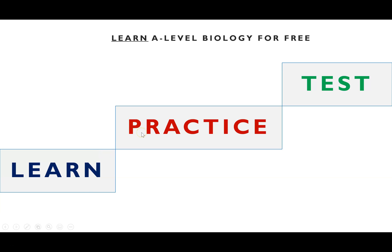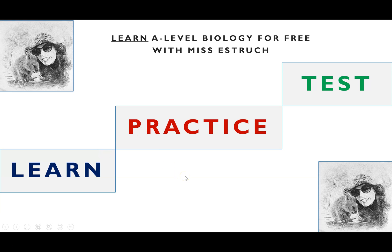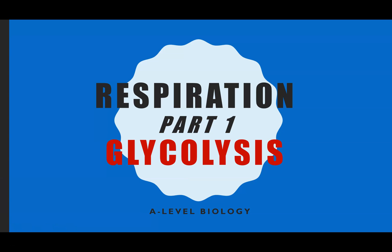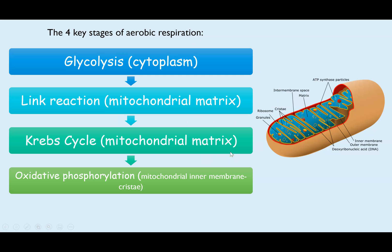Hi everyone and welcome to Learn A-Level Biology for free with Ms. Estrick. This video is going to be part one of aerobic respiration, but glycolysis is also in anaerobic respiration. So just to show you all the stages in aerobic respiration — each of these videos is going to be released this week. Glycolysis happens in the cytoplasm, and then the final three stages in different locations will be in future videos.